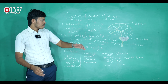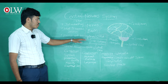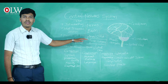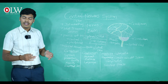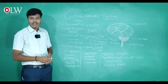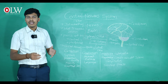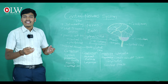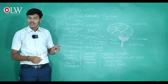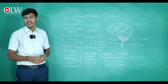Coming to the parts of the nervous system — the nervous system is divided into two types: the central nervous system and the peripheral nervous system. The central nervous system consists of two parts: the brain and the spinal cord.